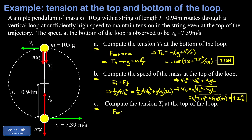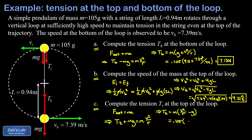Applying Newton's second law with toward-center as positive, both the tension T_t and mg are positive, giving: T_t plus mg equals m times v² over r, where v is the speed at the top. Solving symbolically: T_t equals m times (v² over r minus g). Substituting 0.105 kg, speed 4.21 m/s, radius 0.94 m, and g = 9.8 gives 0.951 newtons.